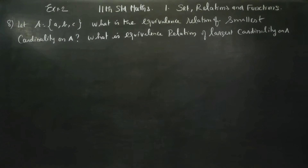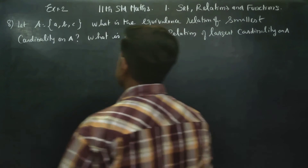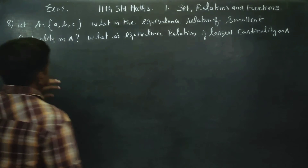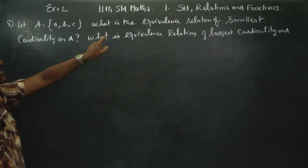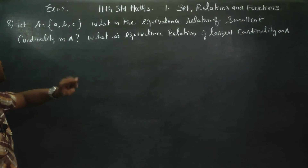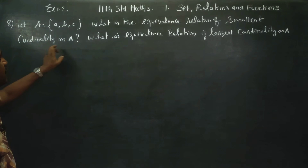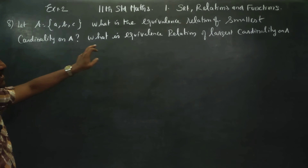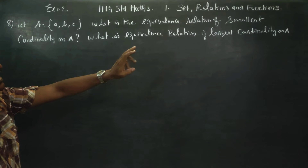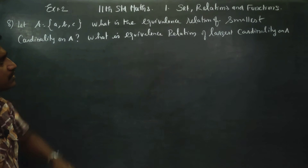Hello 11th Standard Students, I am Karanagaran. In Chapter No.1, Set Relations and Functions, Axis No.1.2 — they are given a set A, B, C. What is the equivalence relation of the smallest cardinality on A? What is the equivalence relation of the largest cardinality on A?